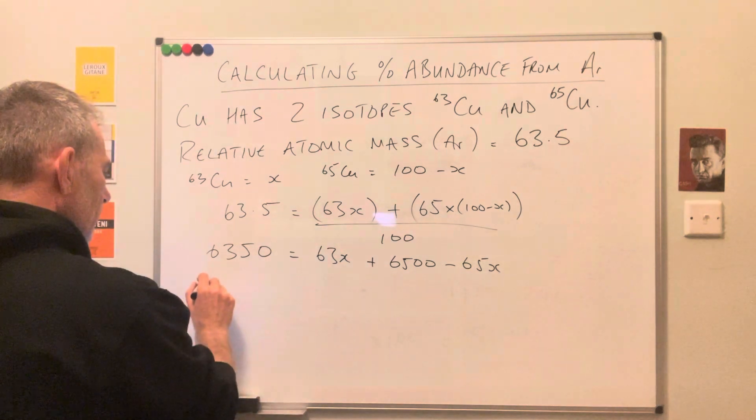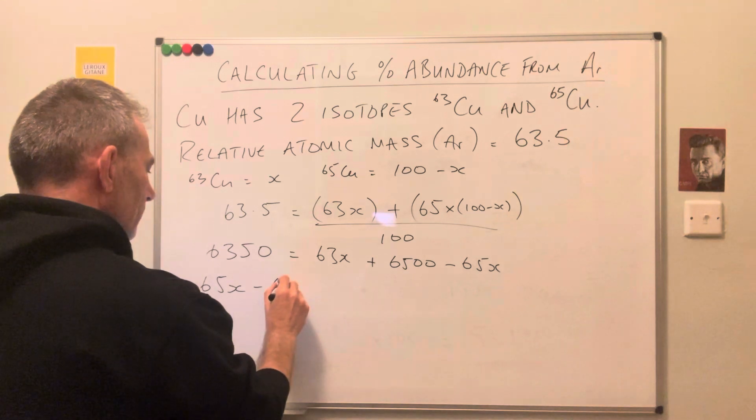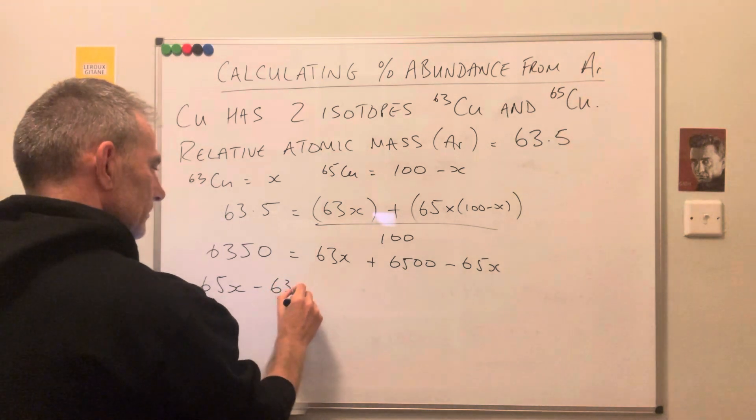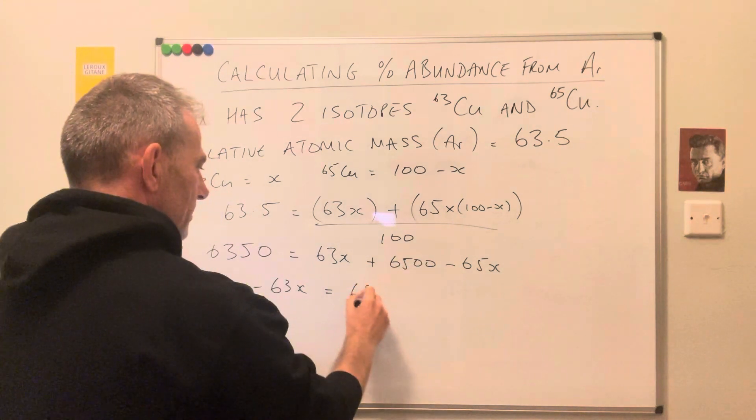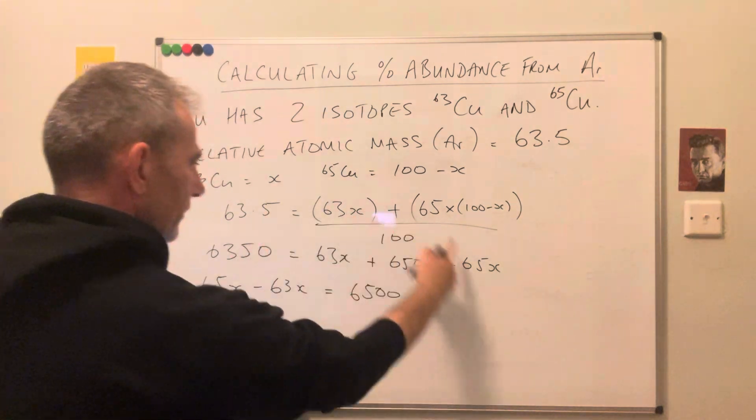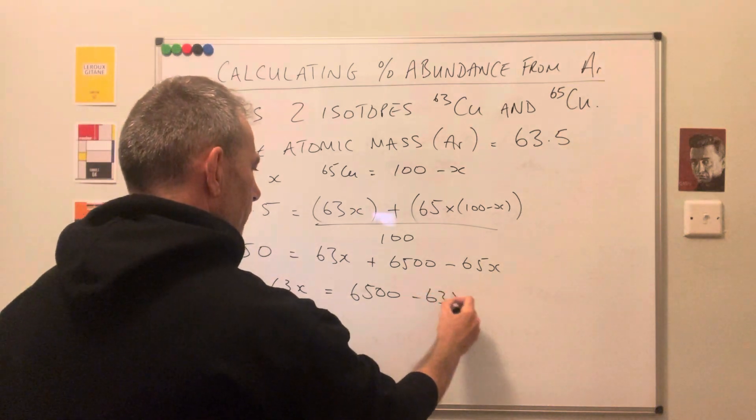I've got enough room, so it becomes 65x minus 63x equals, so 6500, that's going to go over there, so it's going to go minus 6350.